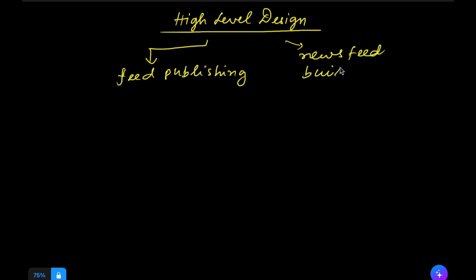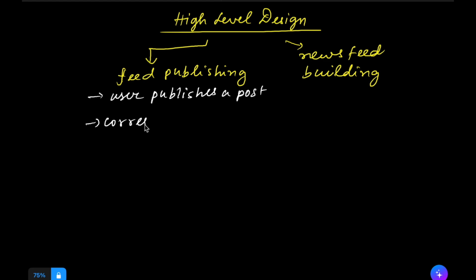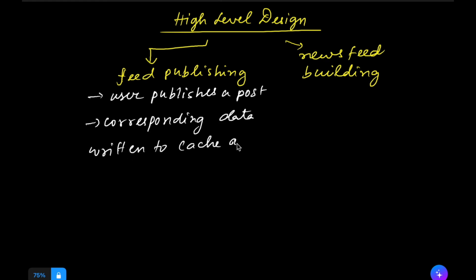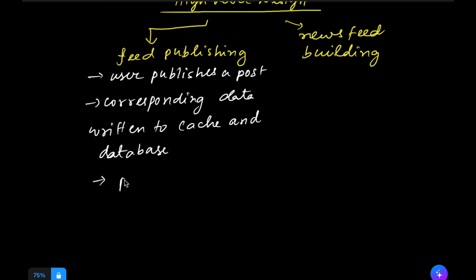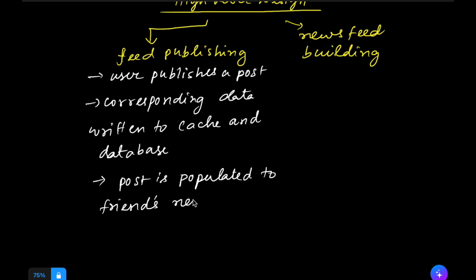In feed publishing, a user publishes a post and the corresponding data related to that post is written into the cache and the database. The post is then populated into the friends' newsfeed. We use cache for fast read and write with low latency, and the database to persist the data. This post is populated to the user's friends' newsfeed cache or database as per our use case.